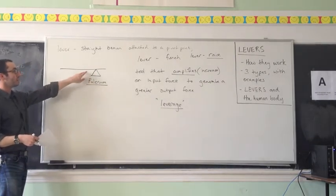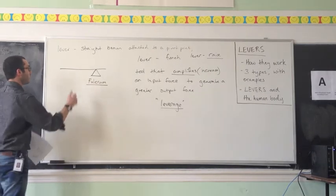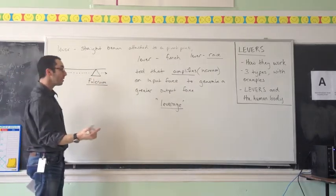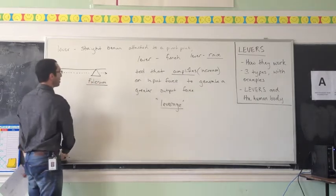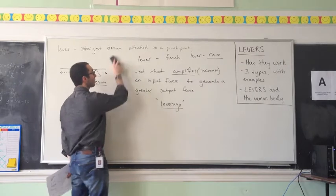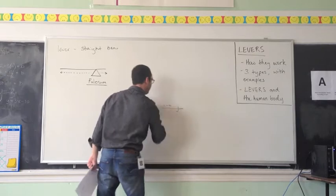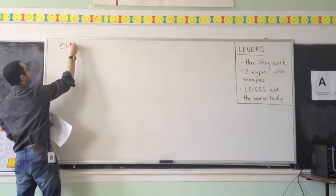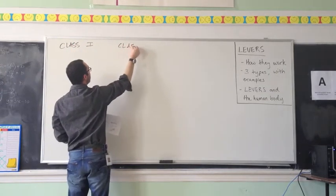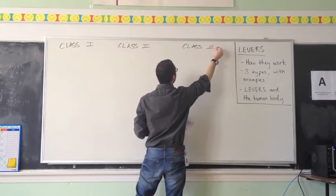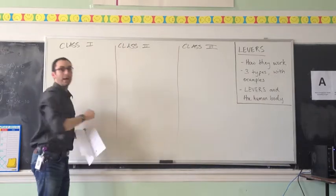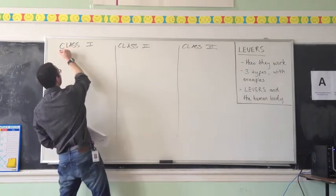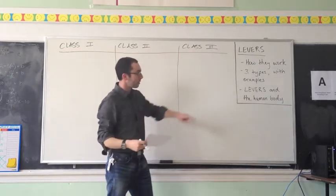Let's go back to our picture of a lever — we have this beam and a fulcrum. The fulcrum can live anywhere along the length of the beam, and depending on where the fulcrum is, that's how the lever is going to work. There are generally three different types of levers, called class one, class two, and class three. I'm going to walk you through each type, give a daily-life example, and then connect it back to levers in the human body.